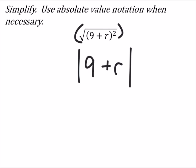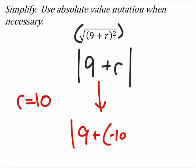So, let's say that, for example, that r is 10. Well, this is saying that we could just use the absolute value of 9 plus negative 10, which is the absolute value of negative 1, which is 1.